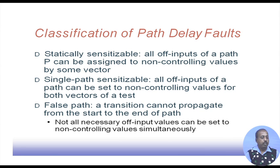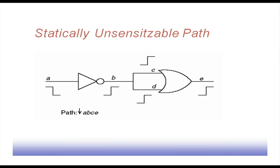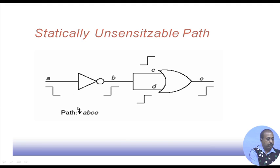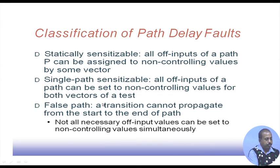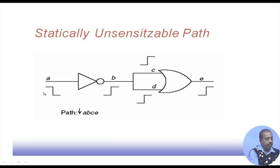The path A-B-C-E is statically unsensitizable because for the high-to-low transition, all inputs are also making transitions simultaneously, so we cannot set other inputs to proper values to let this transition proceed.